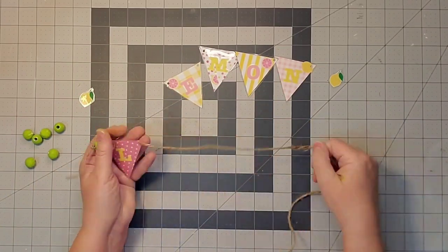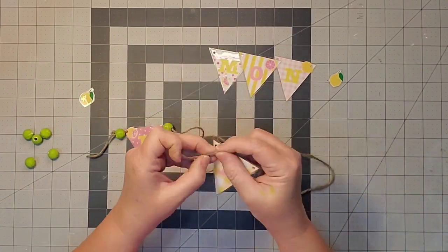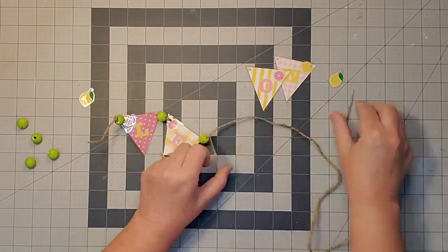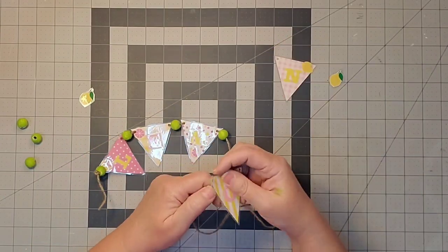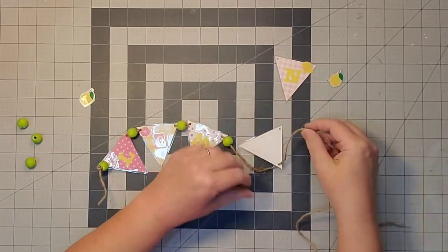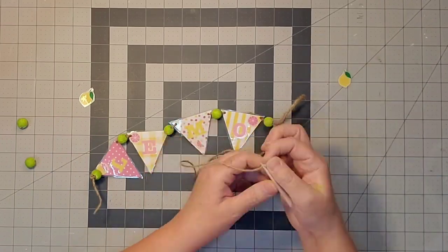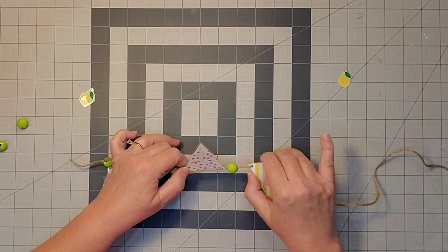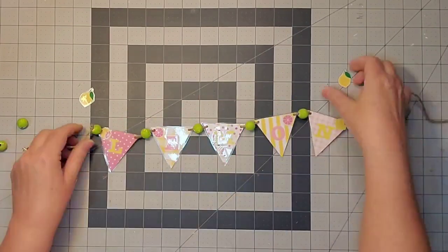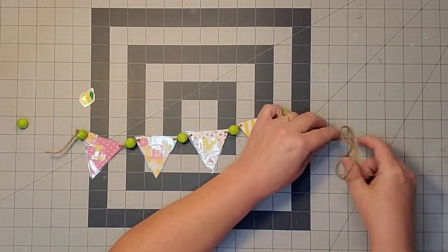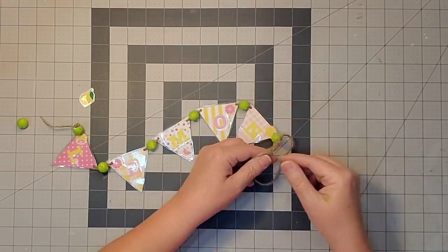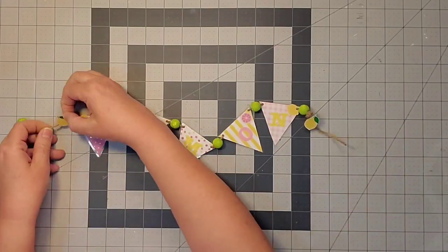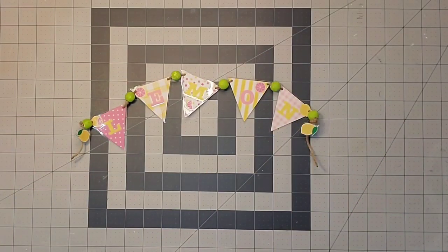Now I'm tying a knot in one end of my twine and stringing on one bead, then a letter, then another bead, and so forth. I put knots at the end so everything doesn't slide off. My advice is leave your twine a little longer than I did for extra area to attach it. Once everything's strung on, I'll glue those larger lemons right at the end. And with that, my project is complete.